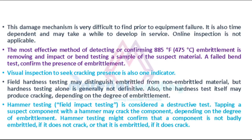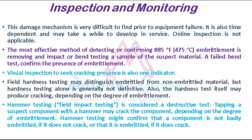This damage mechanism is very difficult to find prior to equipment failure. It is also time dependent and may take a while to develop in service. Online inspection is not applicable. The most effective method of detecting or confirming embrittlement is removing and impact or bend testing a sample of the suspect material. A failed bend test confirms the presence of embrittlement. Visual inspection to see cracking presence is also one indicator. Field hardness testing may distinguish embrittled from non-embrittled material, but hardness testing alone is generally not definitive. Also, the hardness test itself may produce cracking, depending on the degree of embrittlement.